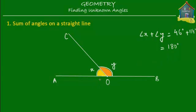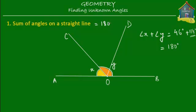No matter how many lines you have — say you shoot another line here and call it D — angle Y gets split into two, but the sum of those two is still equal to 134. So no matter how many lines you have between AO and OB, the sum will always remain the same and always be equal to 180 degrees.